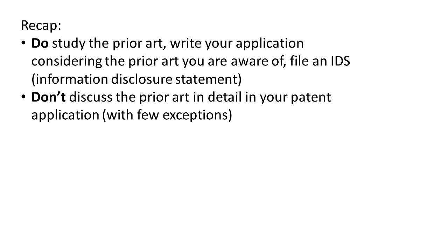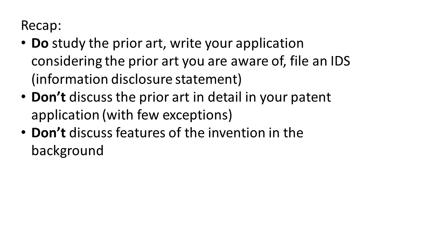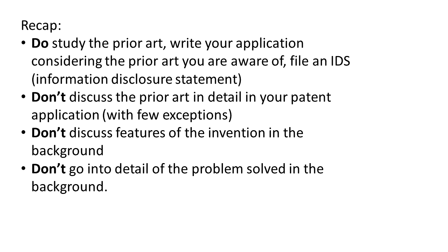You may have specific situations where it does make sense to talk about prior art in more detail, but absent a specific reason to discuss a particular prior art reference, avoid doing it. Don't discuss the features of the invention in the background — put them in the summary and detailed description instead. Don't state the problem in too much detail in the background, because the examiner could say that you laid out a case for why it would be obvious to come up with your invention. If the problem is obvious, the solution is obvious, and obviousness is one of the things that can prevent you from getting a patent.